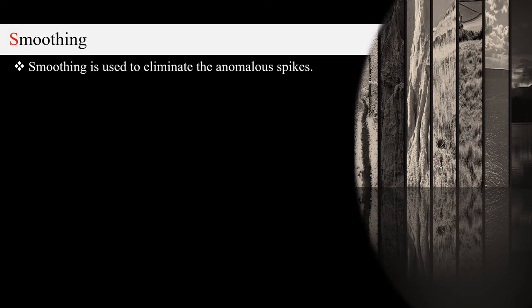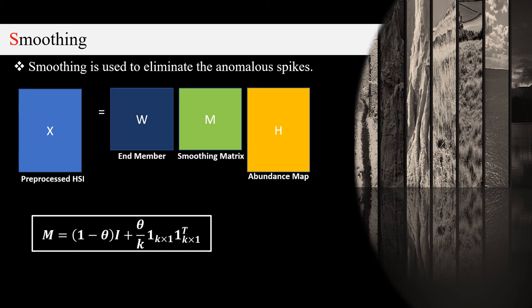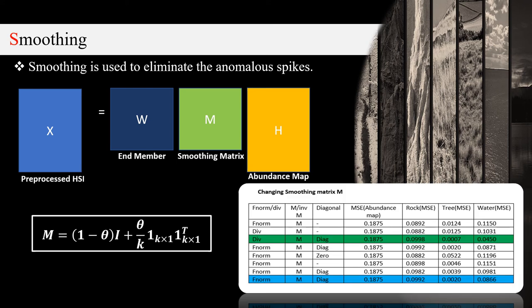Smoothing is done to eliminate the anomalous spikes of endmembers. The utilization of Smoothing matrix in NMF is shown in the following figure. This is the equation typically used for Smoothing matrix where theta is an optimizable parameter and k is number of endmembers. After doing several trials with Smoothing matrices, an improved result was obtained. The green color strip was given the best result we obtained with divergence method diagonal Smoothing matrix at theta equals 0.5.